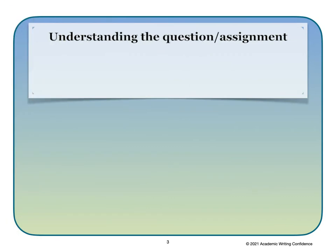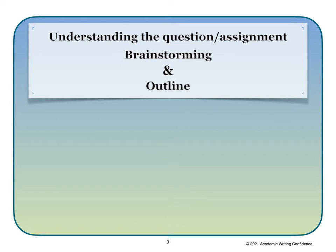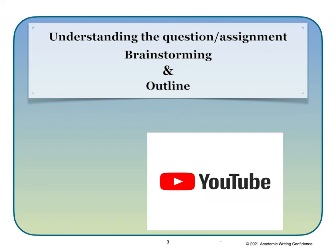The first thing that you need to do when writing an essay is to understand the question or the assignment that you have. After understanding the question, you need to spend some time brainstorming and making an outline of your essay. This can also apply if you're writing from a topic that you have chosen or has been chosen for you.